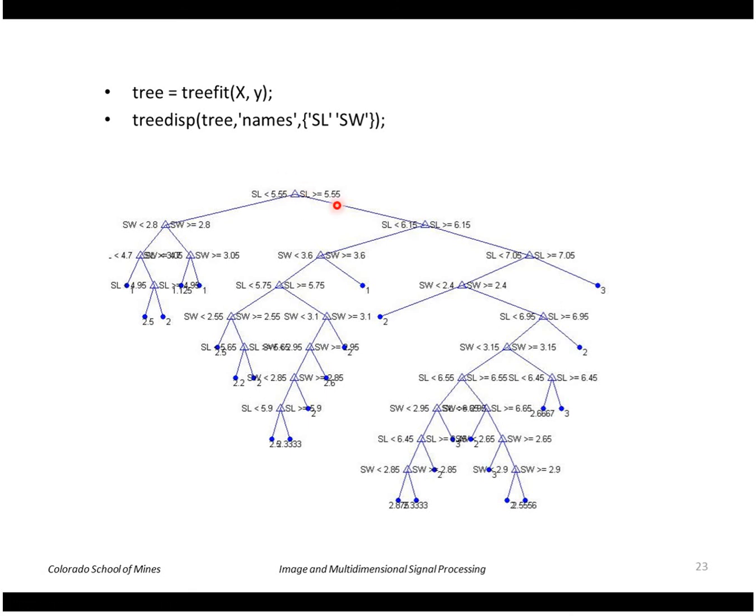The root node looks at SL, sepal length, checks to see if it's less than 5.55 or greater. So if it's less than 5.5 it goes and checks sepal width, et cetera, et cetera. So along the bottom here, you get classes one, two or three for each leaf here.